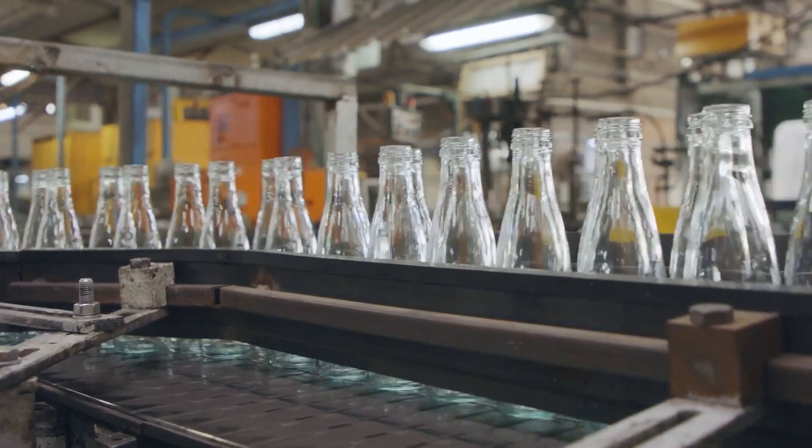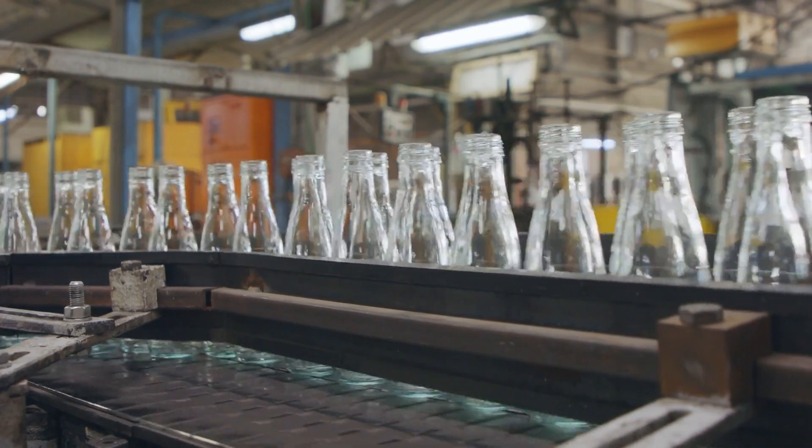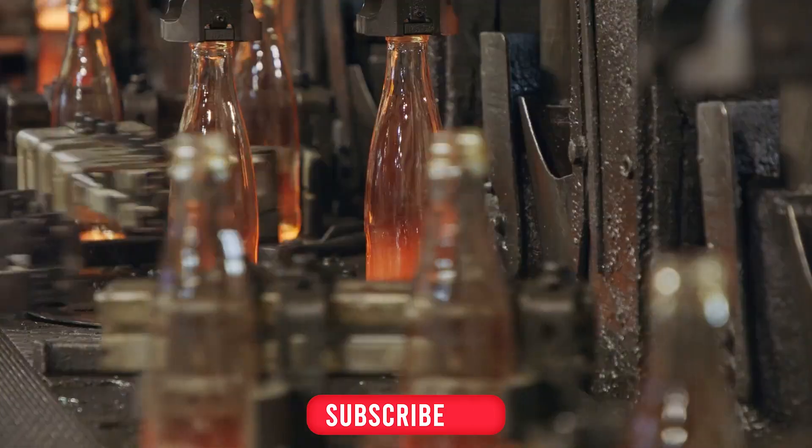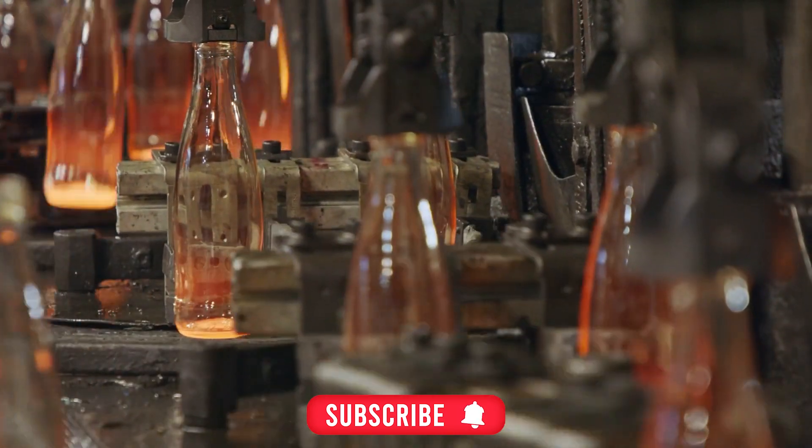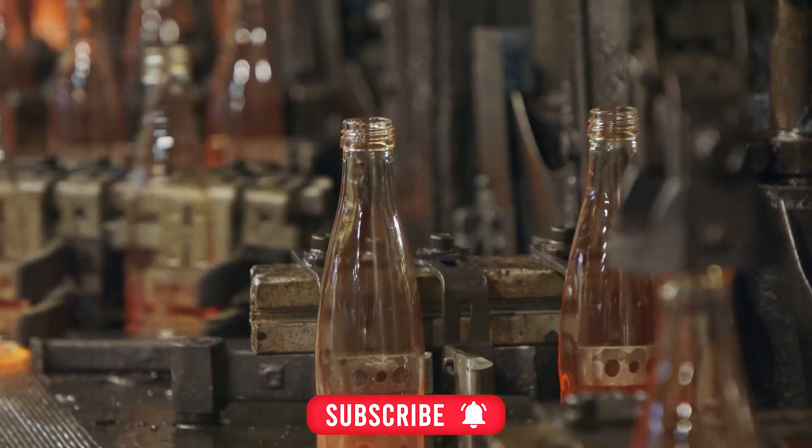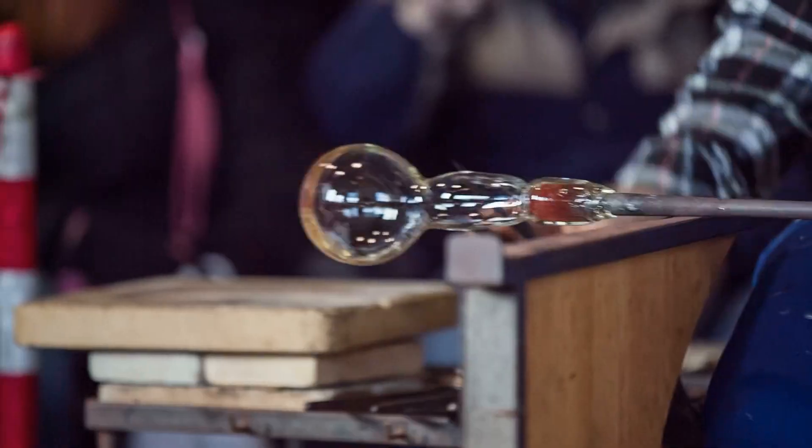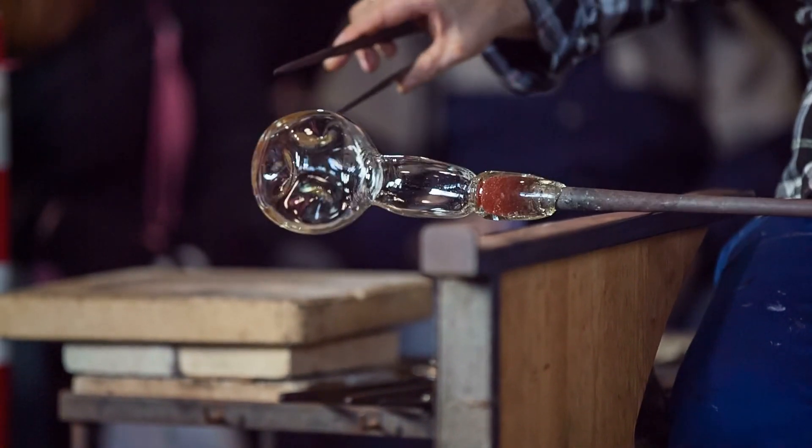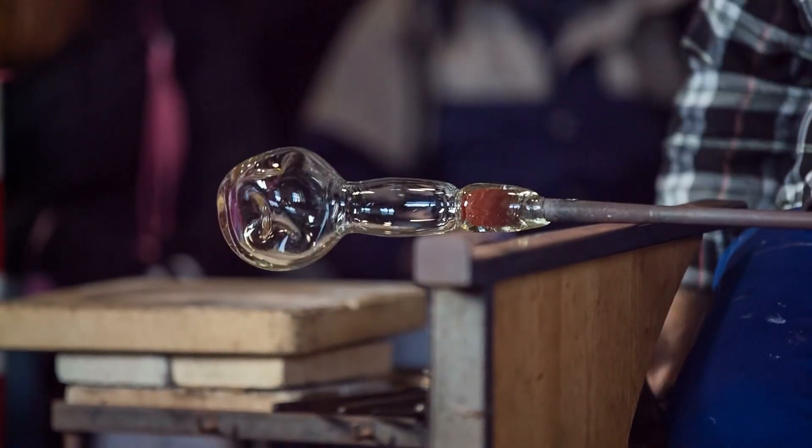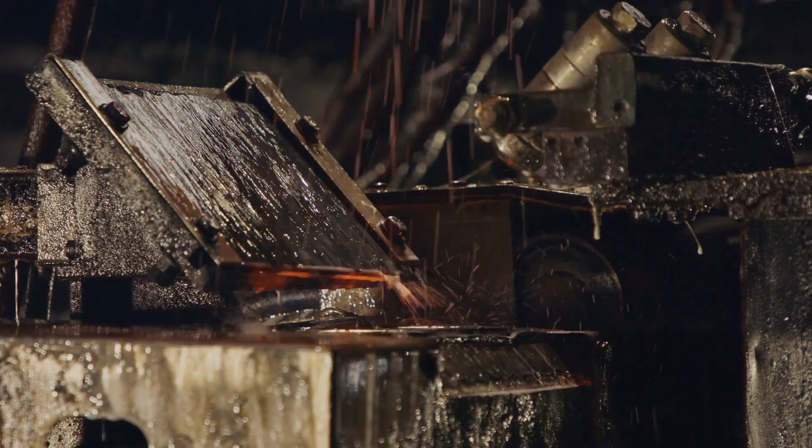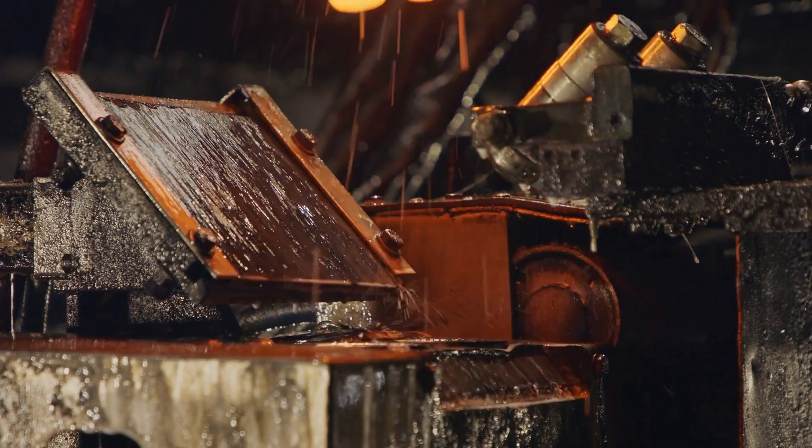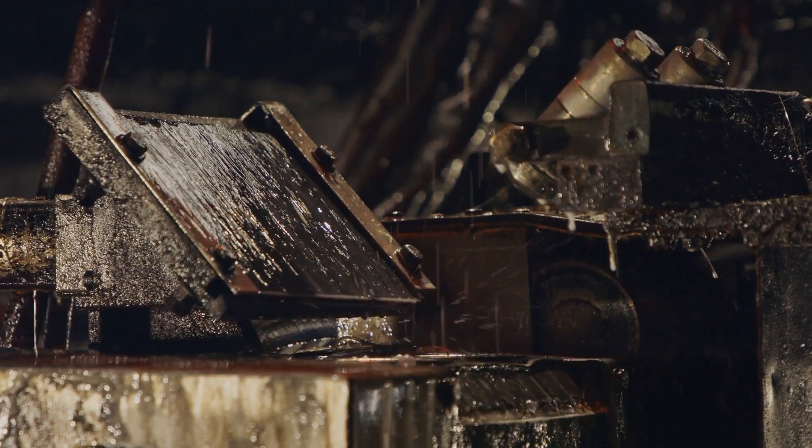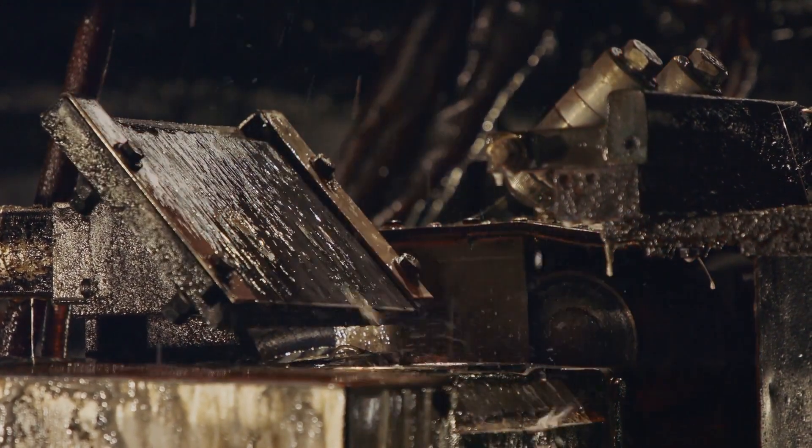The gradual decrease in temperature facilitates the arrangement of molecules within the glass, allowing them to achieve a stable structure. As the temperature declines, the molten glass begins to solidify. The silicon dioxide molecules, which were previously in a state of free movement, start to decelerate and bond, creating a rigid network. This marks the transformation of our initially fluid molten sand into glass as we recognize it. However, the cooling process continues even after it has solidified.